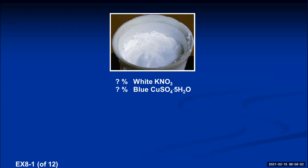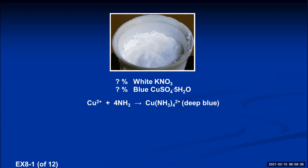What we're going to do experimentally is take the crystals, dissolve them in water. Whenever ionic compounds are dissolved in water, the positive and negative ions separate. The white potassium nitrate will exist in solution as separate potassium ions and nitrate ions. The blue copper sulfate pentahydrate crystals will exist as separate copper-2 ions, separate sulfate ions, and separate water molecules.